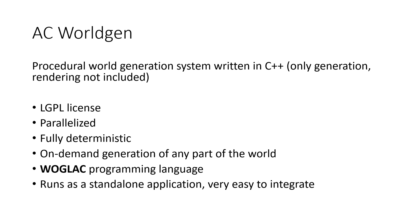AC Worldgen is a very powerful voxel procedural generation system that is parallelized, fully deterministic, with on-demand generation of any part of the world. It comes with its own declarative programming language called Vogelac, with functional C-like syntax.